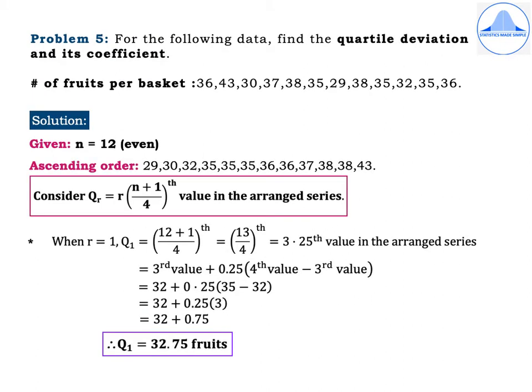Problem 5. For the following data, find the quartile deviation and its coefficient. Number of fruits per basket are 36, 43, 30, 37, 38, 35, 29, 38, 35, 32, 35, 36. Solution: given N = 12, which is even.